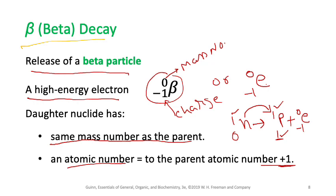The key things to remember: a beta particle is a high-energy electron with mass number 0 and charge −1. During beta decay, the mass number of the daughter nucleus does not change, but the atomic number increases by one.